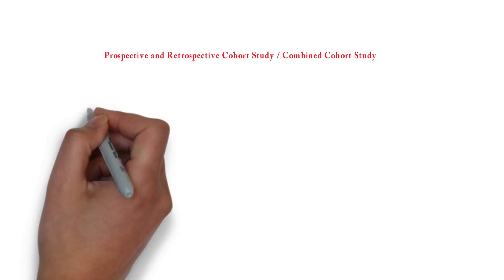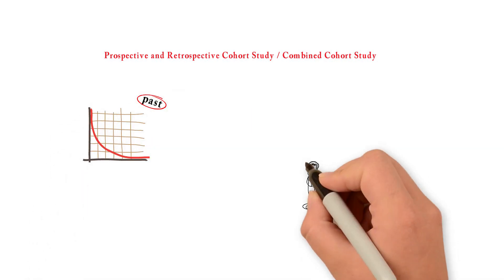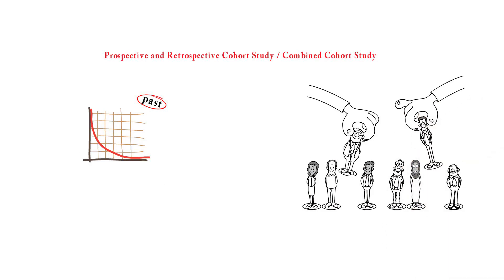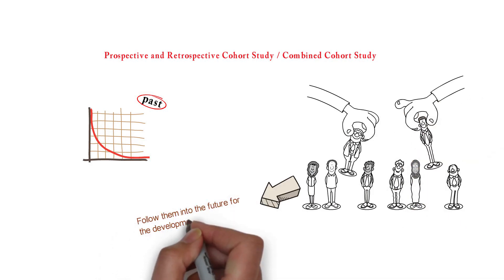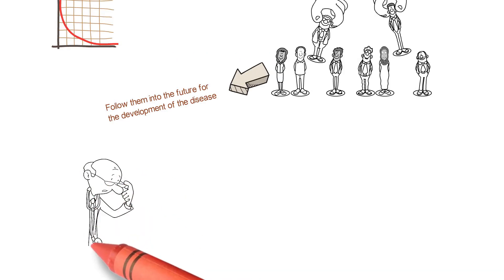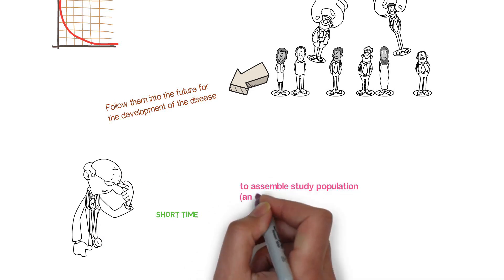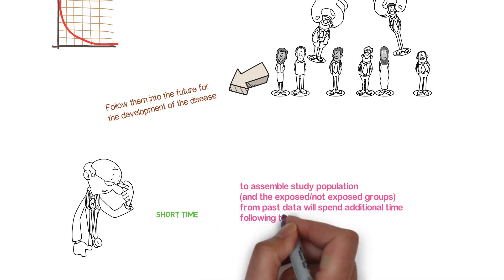Prospective and retrospective combined cohort study: the investigator uses existing data collected in the past to identify the population — exposed or not exposed — then follows them into the future for the development of disease. The investigator spends a relatively short time to assemble the study population from past data, but will spend additional time following them into the future for the development of disease.